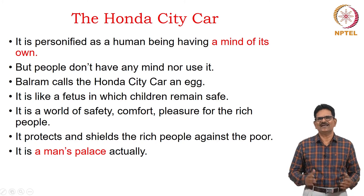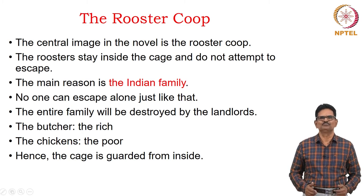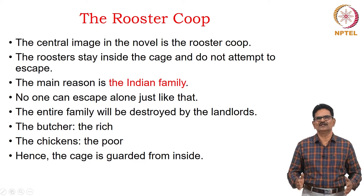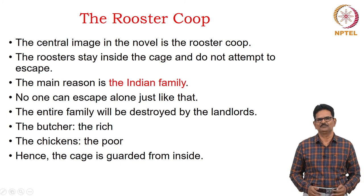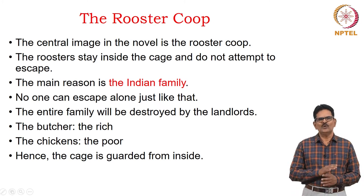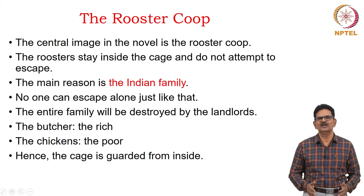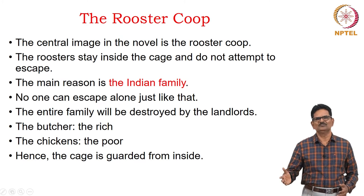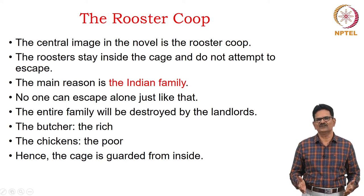It is again considered to be a man's palace. The most important symbol in the novel is the rooster coop — the central symbol. The roosters stay inside the cage and do not attempt to escape, and the main reason is the Indian family. From one point of view, the Indian family is glorified as a great institution, but the novel reveals certain negative dimensions. As Balram says, no one can escape alone from the family system, because if one does something wrong, the entire family will be destroyed by the landlords. The butcher is a symbol of the rich and the chickens are the symbol of the poor people, and the cage is guarded from inside out of fear for protecting the family.